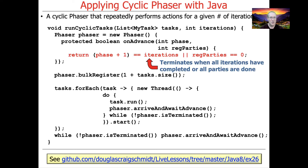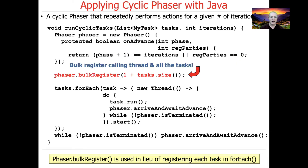This onAdvance hook method terminates when all the iterations have completed or when all the parties have gone away. We'll see how that gets used with the isTerminated method on the phaser. Next, we use the bulkRegister method on the phaser. We take into account the calling thread — that's one — plus all the tasks, each of which will run in its own thread. So we register one plus the number of tasks all at once, in one fell swoop. In the previous example we registered dynamically each time in the loop; here we're registering everything ahead of time, more like a CyclicBarrier use case.